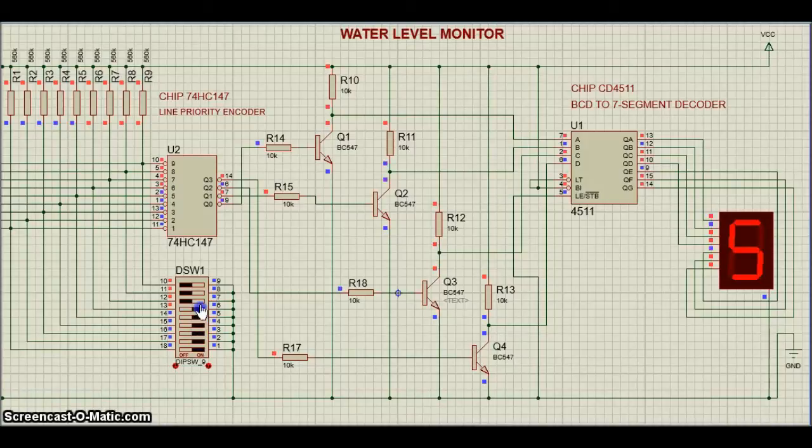Finally, when the tank is full, all the inputs of U2 become low and its output goes low to make all the inputs of U1 high. Display LTS543 now shows nine, which means the tank is full.